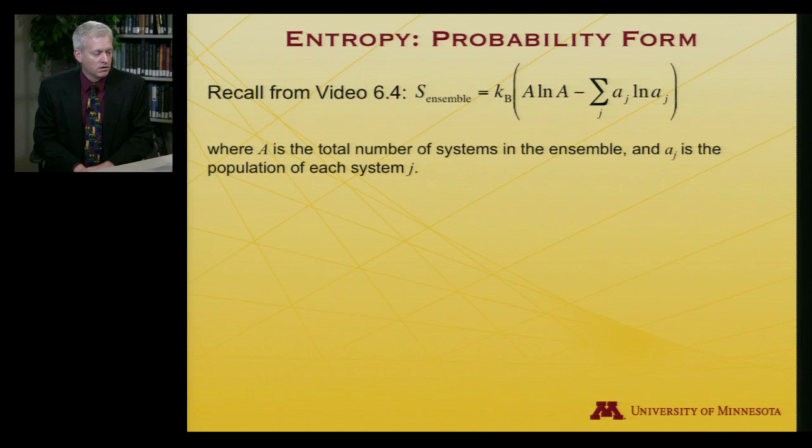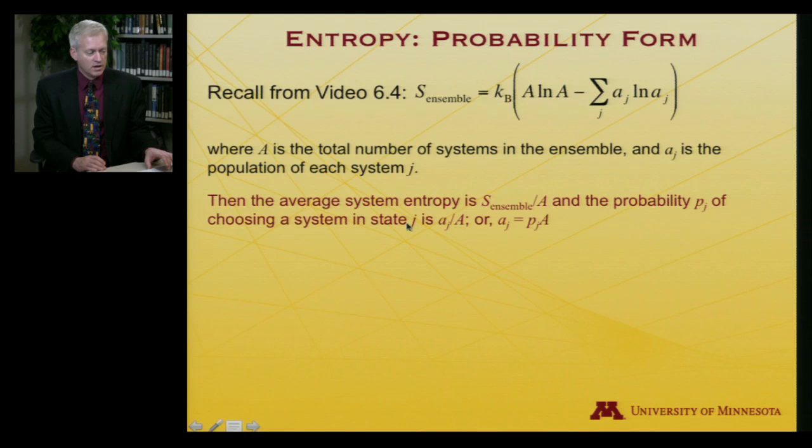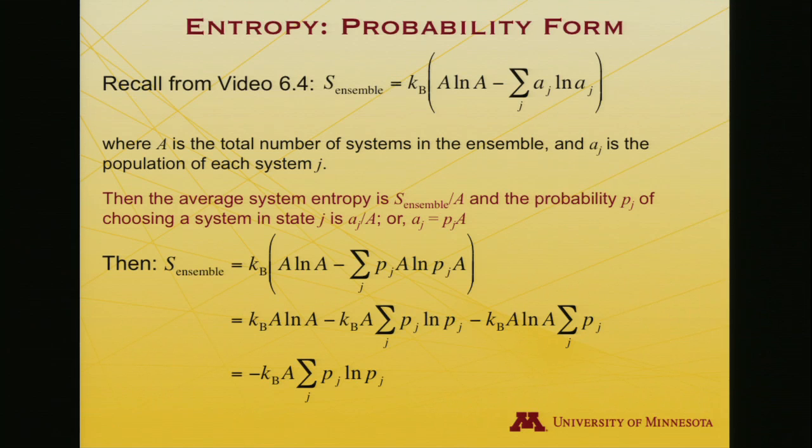Let me remind you that from an earlier video this week, we established that the entropy of an ensemble was Boltzmann's constant times A log A minus sum over j little a log a, where that capital A was how many systems are there in the ensemble and the little a was the population of each of those systems. You can also talk about the average entropy of a given system and that's just the total entropy of the ensemble divided by the number of systems. You can also talk about the probability p sub j of choosing a system in state j and that is how many are there in state j divided by how many there are total. So in that case, I could just say aj is equal to pj times capital A.